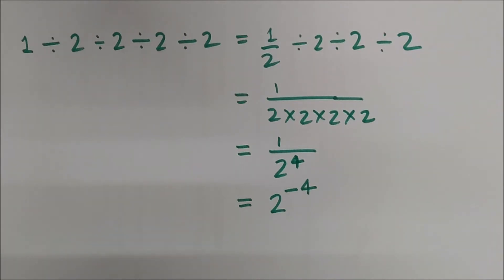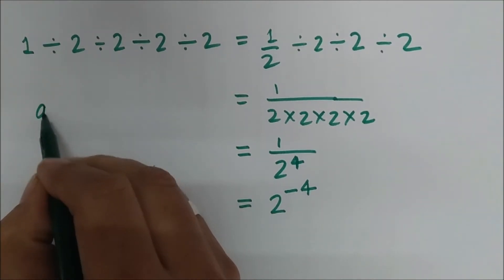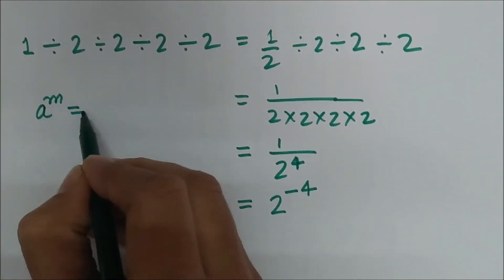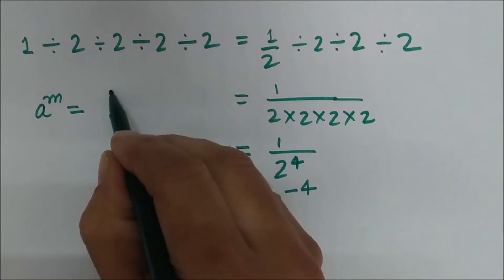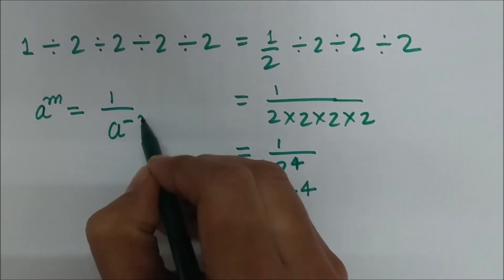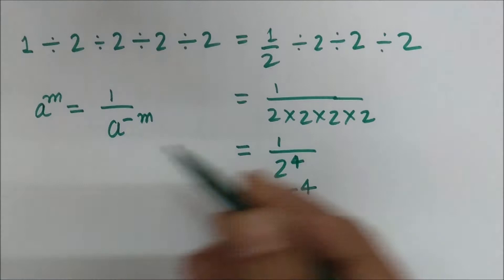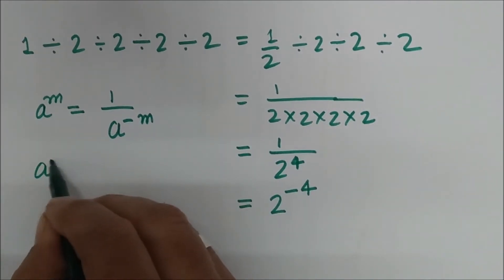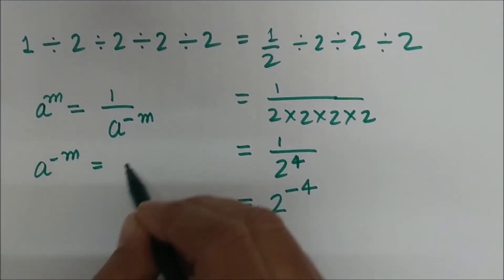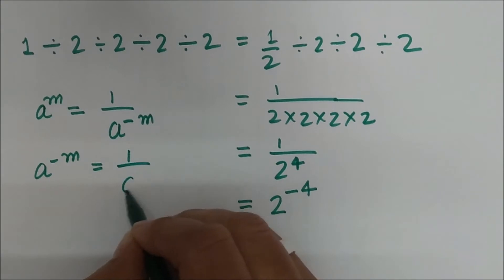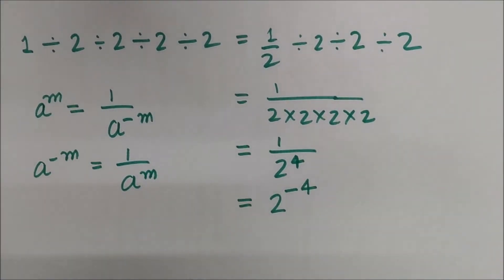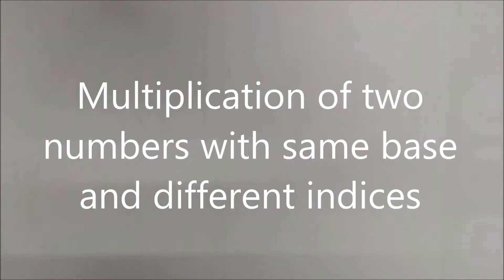This brings us to the very first rule of indices: any index a raised to the power m can be denoted as 1 divided by a raised to the power minus m, or vice versa — a raised to the power minus m is equal to 1 divided by a raised to the power m. To convert negative indices, we simply flip the position.